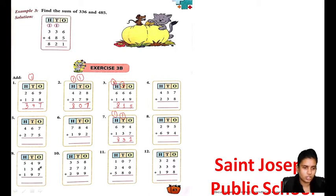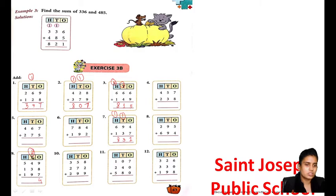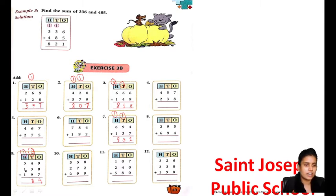Now I am taking question number 9. 9 plus 8 is 17, 17 plus 7 is 24, 2 carry. Add it: 4 plus 2 is 6, 6 plus 3 is 9, 9 plus 9 is 18, 1 carry. 5 plus 1 is 6, then 6, 7, 8. Answer: 884.